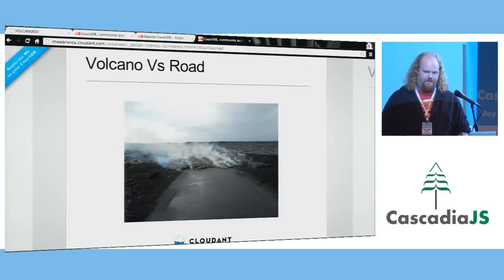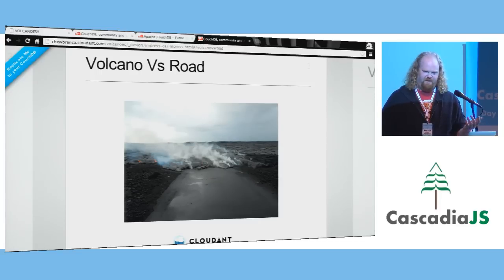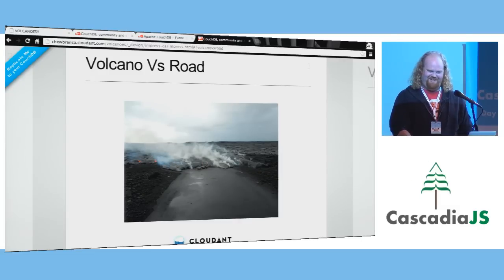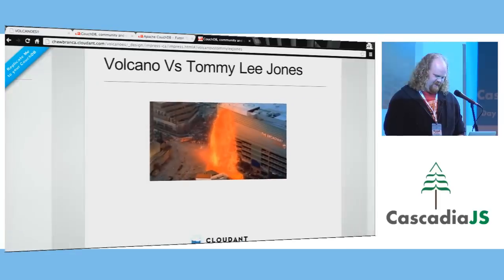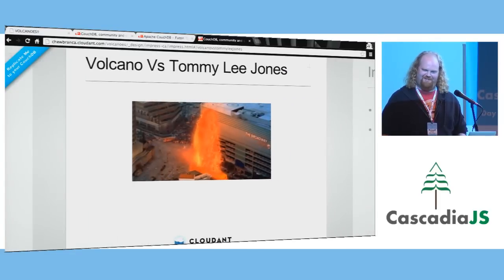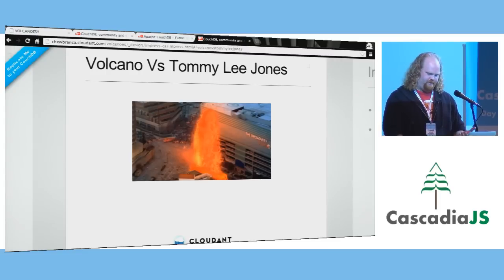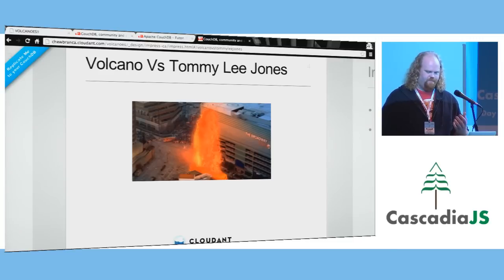The last couple times I've been out there, there's actually been heavy volcanic activity. This picture here is actually a picture I took — I was about 15 feet away from lava flow. That used to be a road. It's not like the Tommy Lee Jones movie, but it's still interesting. It takes over roads and houses. It's a serious issue. And so I wanted to use that as a demo data set for working with interactive visualizations.